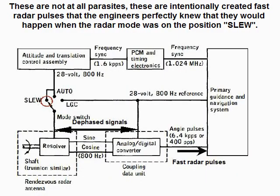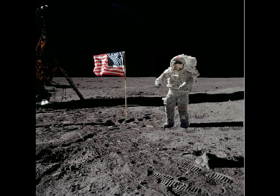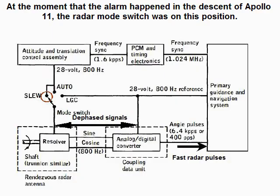These are not parasites at all — these are intentionally created fast radar pulses that the engineers perfectly knew would happen when the radar mode switch was on the SLU position. At the moment the alarm happened during the descent of Apollo 11, the radar mode switch was on this position.